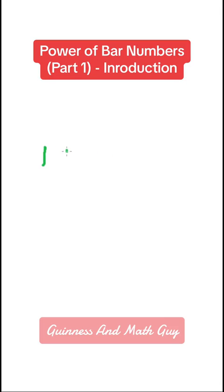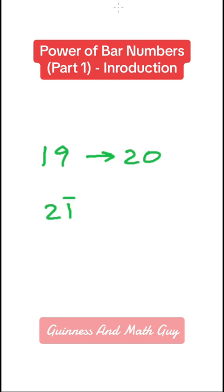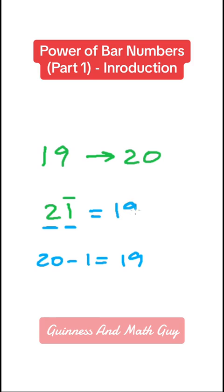The number 19 is very close to 20 and we can write it as 2 bar 1. Here, 2 is at the 10th place so it's 20, and bar 1 (negative 1) is at the units place, so it's negative 1. So 20 minus 1 is 19. There is no difference between 2 bar 1 and 19, and it's a very powerful thing.